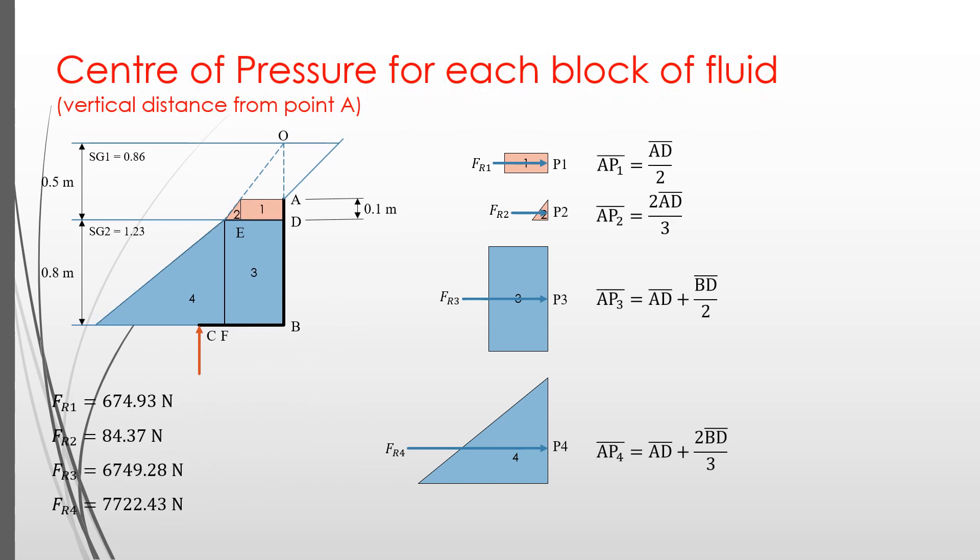Now we calculate the point of application of the resultant forces obtained previously. The point of application, or total pressure, is nothing else than the centroid of each of these shapes. Let's name them P1, P2, P3, P4, the location of the center of pressure of rectangle 1, triangle 2, rectangle 3, and triangle 4 respectively. We know that the centroid of a rectangle is in the middle, and the centroid of a triangle is at two-thirds from the top.